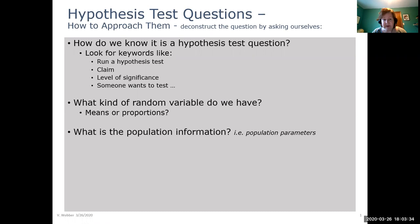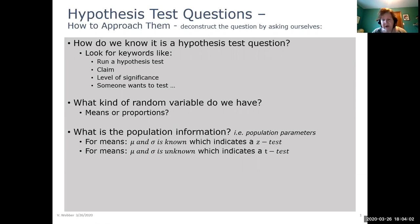Once we figure out what the random variable is we want to know and look for well what's the population information, in other words what are the population parameters. So for means we have the center mu and the spread sigma and when sigma is known we would be using a z test to do that analysis.